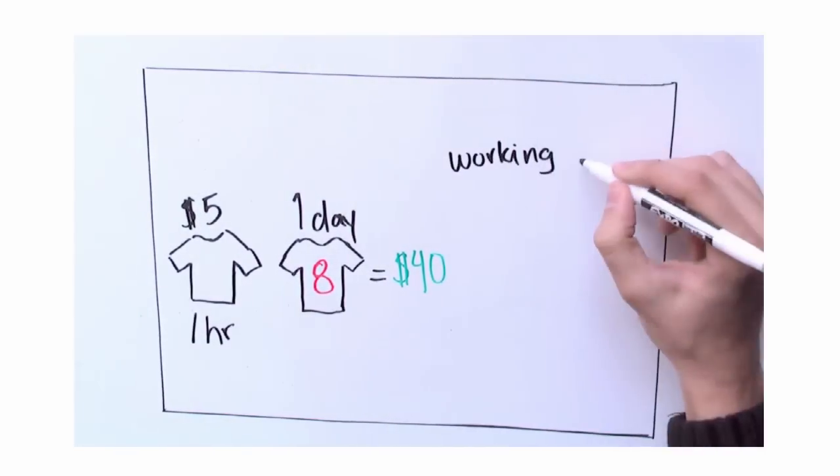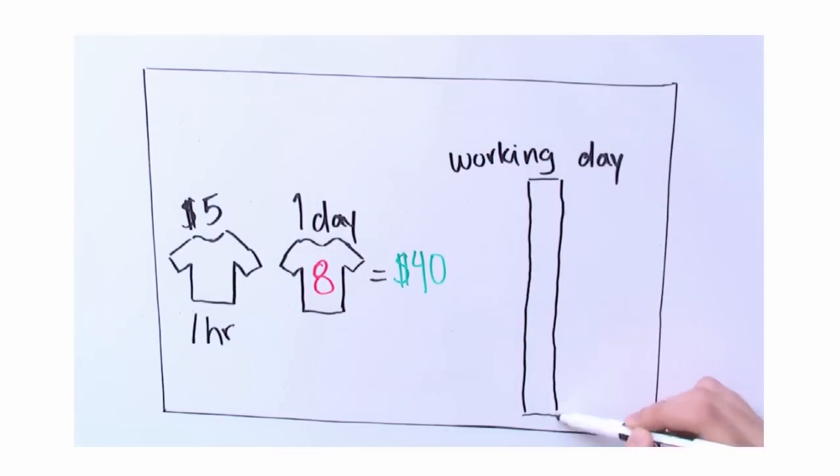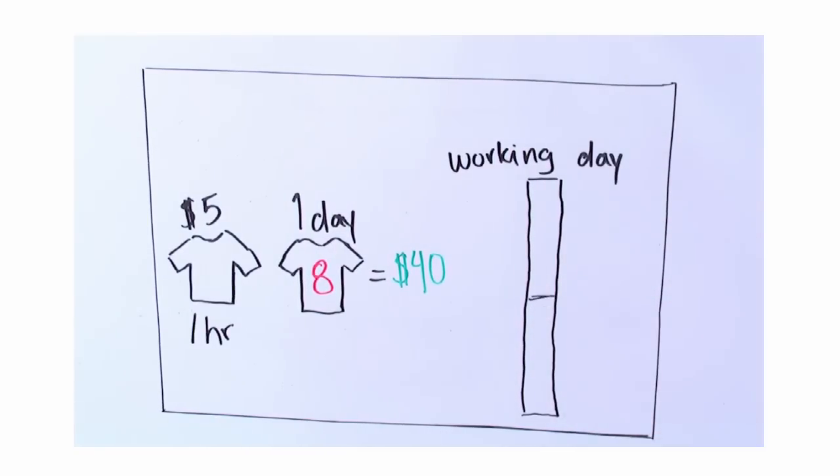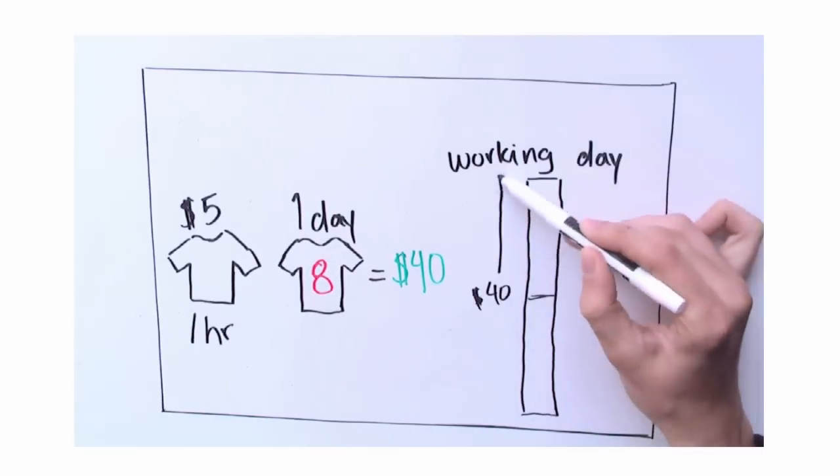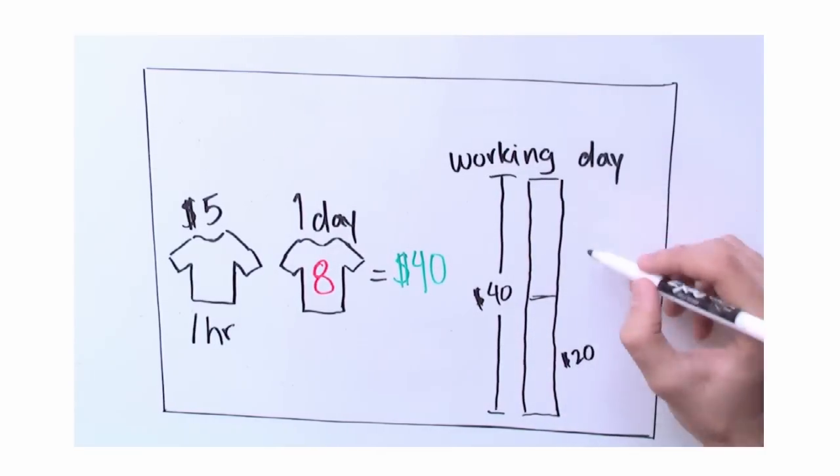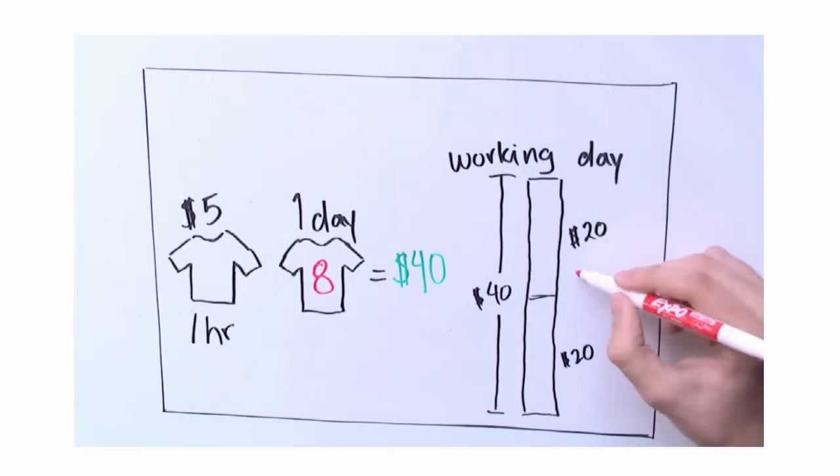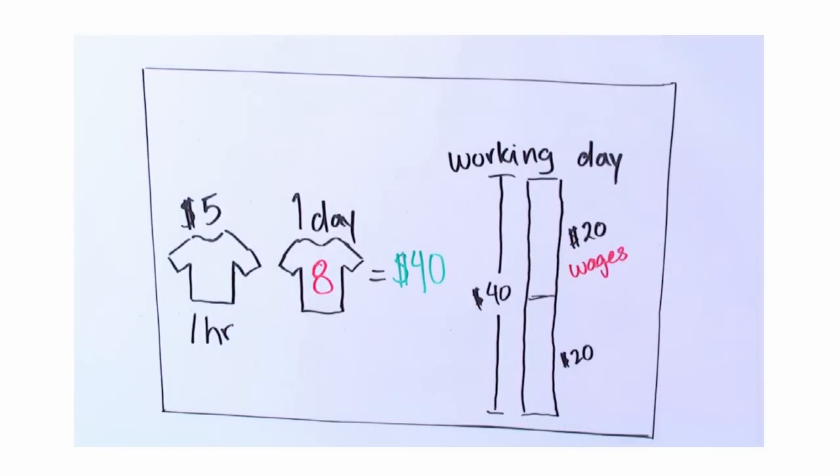The worker therefore spends about half of the working day earning his or her wages, the $20 he was promised by the capitalist from a day's worth of work. The problem for the worker is that there is not a way to check out after making 4 t-shirts. No financially conscientious boss is going to let their worker clock out before the working day is up, so the worker stays and works another 4 hours, producing above and beyond the ticket price of his wages.